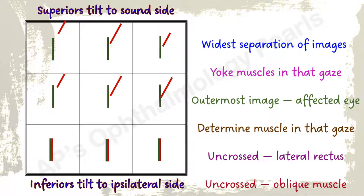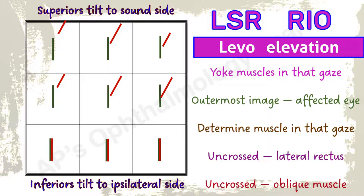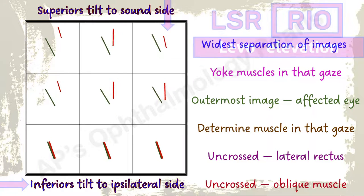Here, maximum separation of images is in levo elevation. The yoke muscles in levo elevation are the left superior rectus and the right inferior oblique. Red is the outermost image, so this is a right inferior oblique palsy. This is an uncrossed diplopia, so the oblique checks out. Tilt is towards the ipsilateral right side, so the inferior checks out.